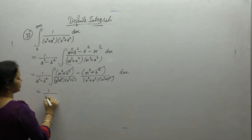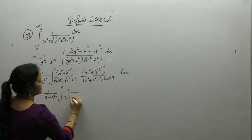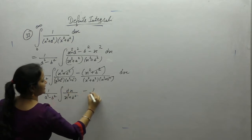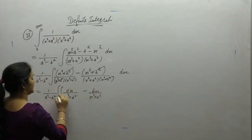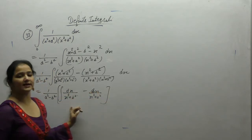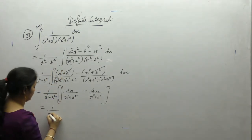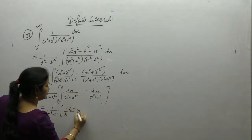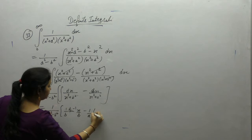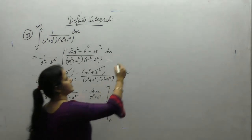If we use partial fractions here it becomes a bit lengthy, so we prefer this method. We now have minus 1/(x² + a²). The integral of 1/(x² + a²) is (1/a) tan⁻¹(x/a). The limit is 0 to infinity.